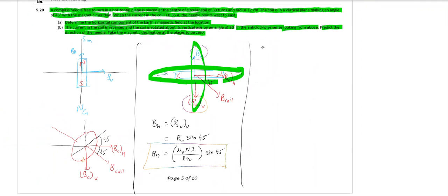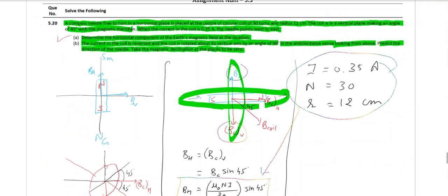Now do we have I available? Check. I is 0.35 ampere, number of turns is 30, and R is 12 centimeters. Don't forget to convert it into meters. So you have all the data available. Substitute in this equation and you will have the answer of part A.